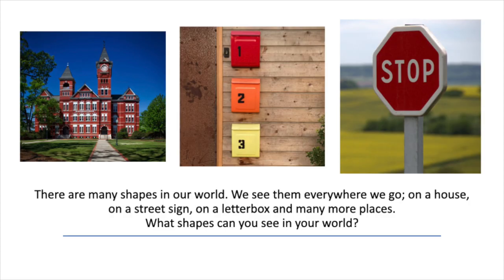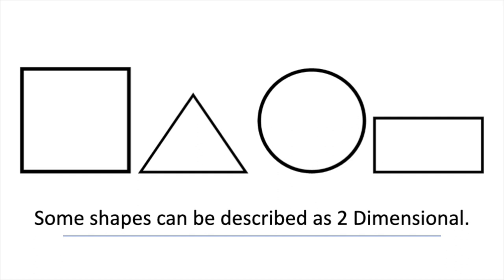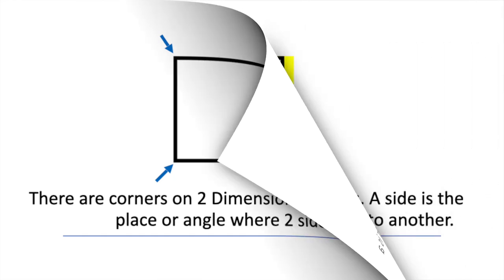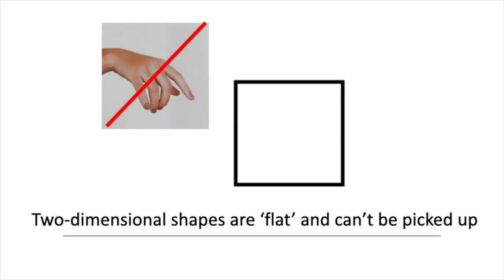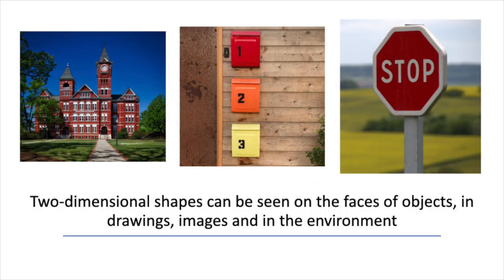Let's revisit it. There are many shapes in our world — we see them everywhere we go. Some shapes can be described as two-dimensional. There are corners on two-dimensional shapes. There are sides on two-dimensional shapes. Two-dimensional shapes are flat and can't be picked up. Two-dimensional shapes have been seen on the faces of objects, in drawings, and in the environment.